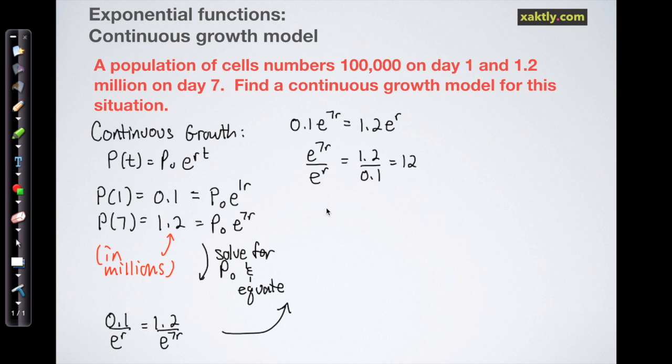And then I can use the law of exponents. E^(7r) over e^r is just e^(7r minus r), so that gives us e^(6r). And I have my r trapped in the exponent, so if I want to release that I'll squeeze in a natural log here. So I get 6r is equal to the natural log of 12, so r finally is equal to ln(12) over 6.